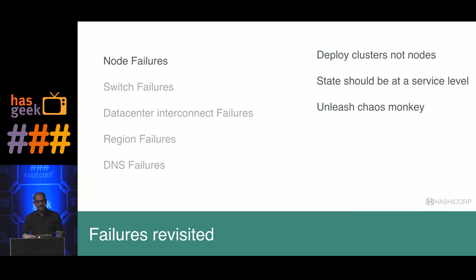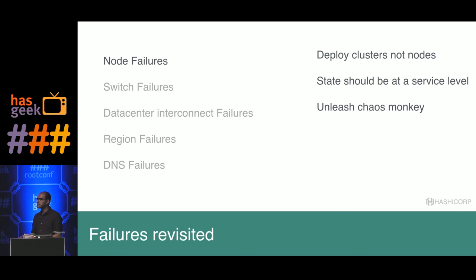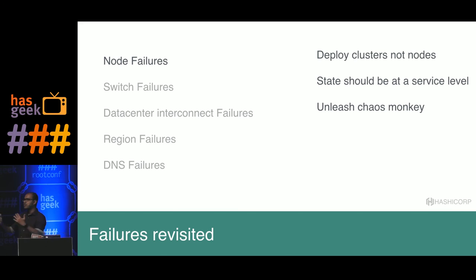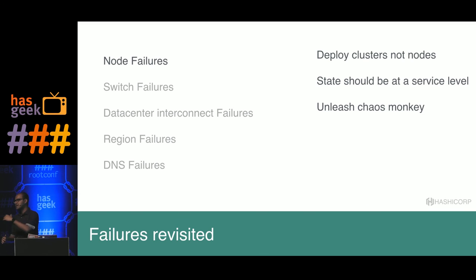Let's revisit the types of failures. Node failures are something you'll see very often on public cloud, especially AWS. The way to solve node failures is to deploy clusters, not individual nodes — 'cattle over pets.' Don't babysit servers or give them names; think of your software as a cluster of servers. State should always be at a service level — if you're using a persistent medium, it should be deployed in a cluster with replication. Then unleash Chaos Monkey to see whether you can withstand node failures.